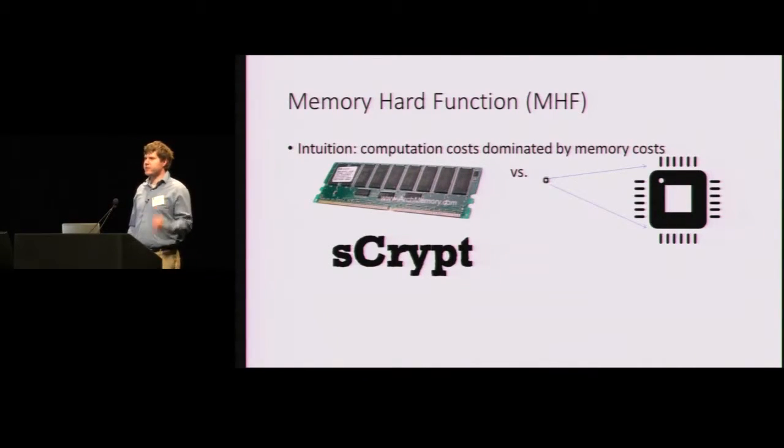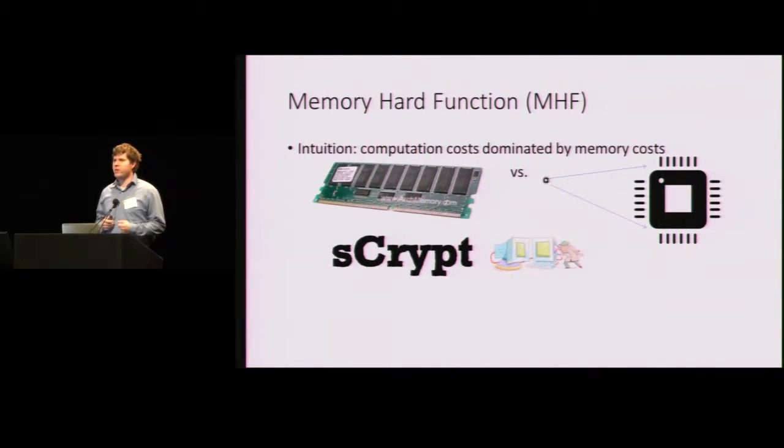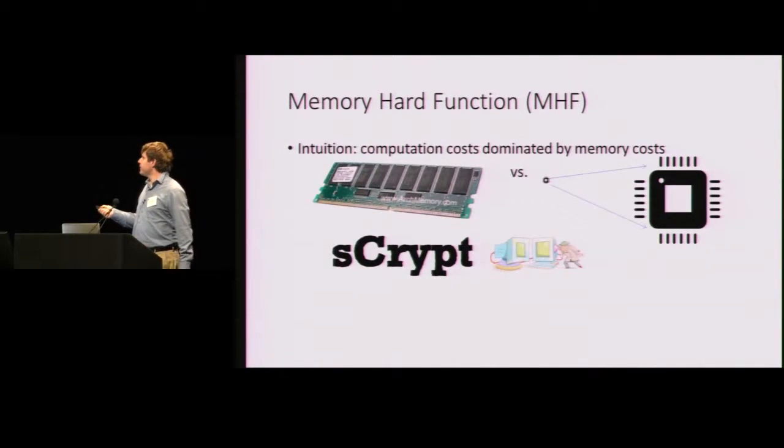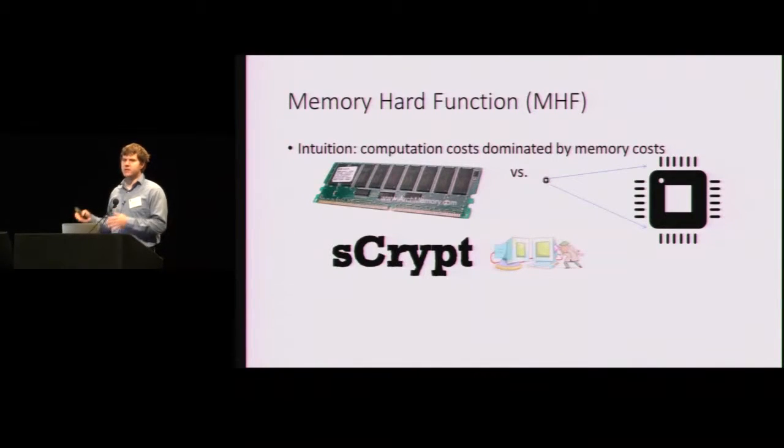So S-crypt is one classical example of a memory hard function. And the next talk will actually give some exciting new positive results for S-crypt. One of the downsides with S-crypt though is that S-crypt induces a data dependent memory access pattern. That means that the pattern in which memory is accessed depends on the sensitive user input, in this case, the user's password.